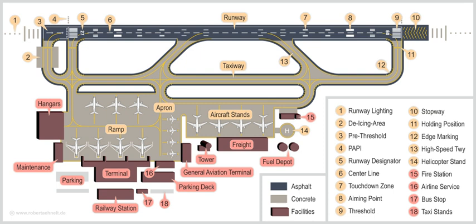An airport solely serving helicopters is called a heliport. An airport for use by seaplanes and amphibious aircraft is called a seaplane base. Such a base typically includes a stretch of open water for takeoffs and landings, and seaplane docks for tying up. An international airport has additional facilities for customs and passport control, and such airports rank among the most complex and largest built topologies, with 15 of the top 50 buildings by floor area being airport terminals.